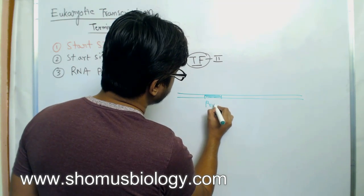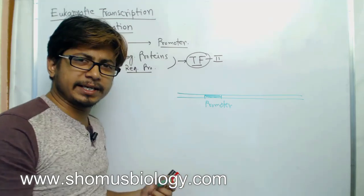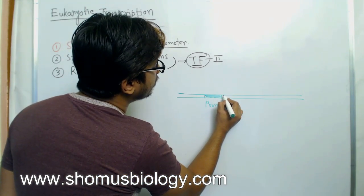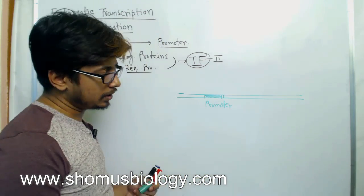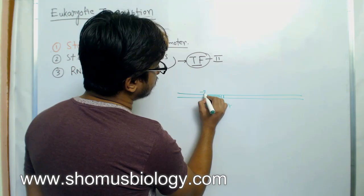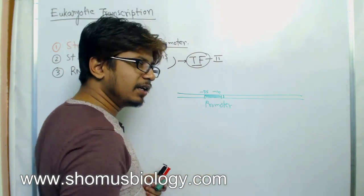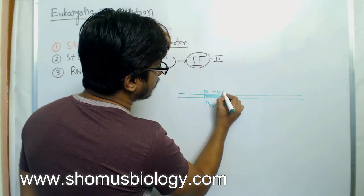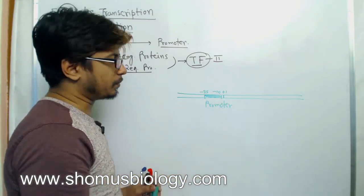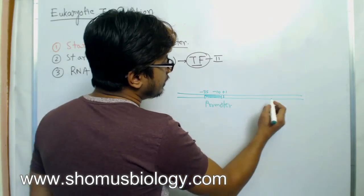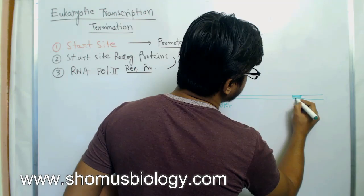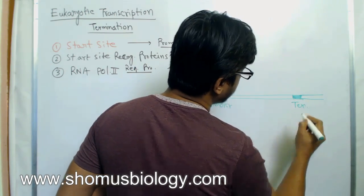The start site is the promoter, although actually the start site is present a few nucleotides downstream of the promoter. The promoter is normally upstream — we call it the minus 35 to minus 10 sequence — and the start site is known as plus one. Further downstream we have the termination site.